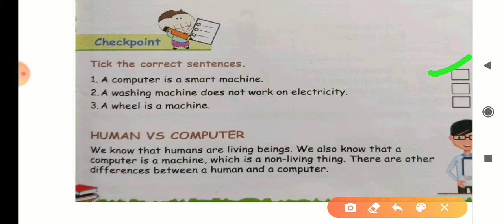Checkpoint. A computer is a smart machine. A washing machine does not work on electricity. Wrong. A washing machine needs electricity to work. So, this statement is false. Next is, a wheel is a machine. A wheel is a machine that needs human power to work. So, last one is a right option.